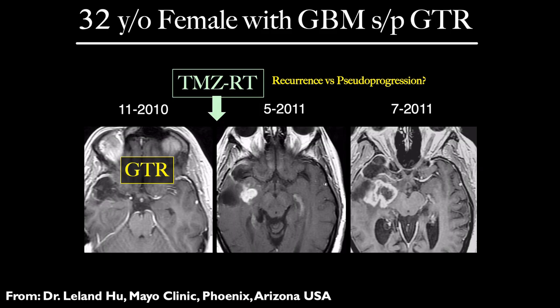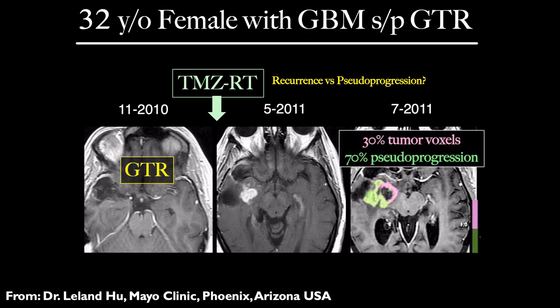The example of using FTB is shown here for a 32-year-old female with a glioblastoma multiforme. After gross total resection, she was treated with chemotherapy plus radiation therapy, and a new enhancing lesion appeared — the question being, is it recurrence or pseudoprogression? A couple months later it looked even worse. If we create our FTB maps, we can see that 30% of that enhancing lesion is tumor and 70% is pseudoprogression. Having this knowledge of how much of this enhancement is actual tumor can be very, very relevant in terms of the treatment decisions that are made.